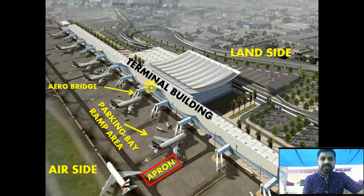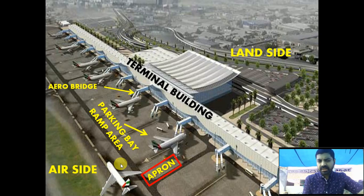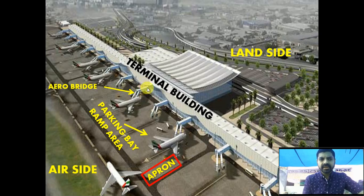Next is the aero bridge, which connects the terminal building to the aircraft. After the aircraft is parked and engines are shut off, passengers come through this bridge and enter the aircraft — this is called embarkation. If the aircraft is parked far from the terminal building, step ladders are used instead, and passengers are taken by coach or bus to the aircraft. For bigger aircraft or full international and heavy domestic flights, the aero bridge is used for boarding and deplaning.